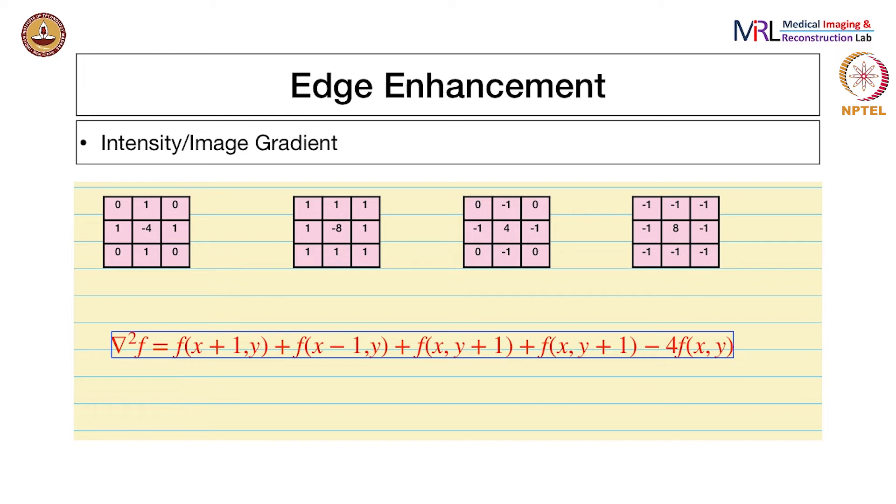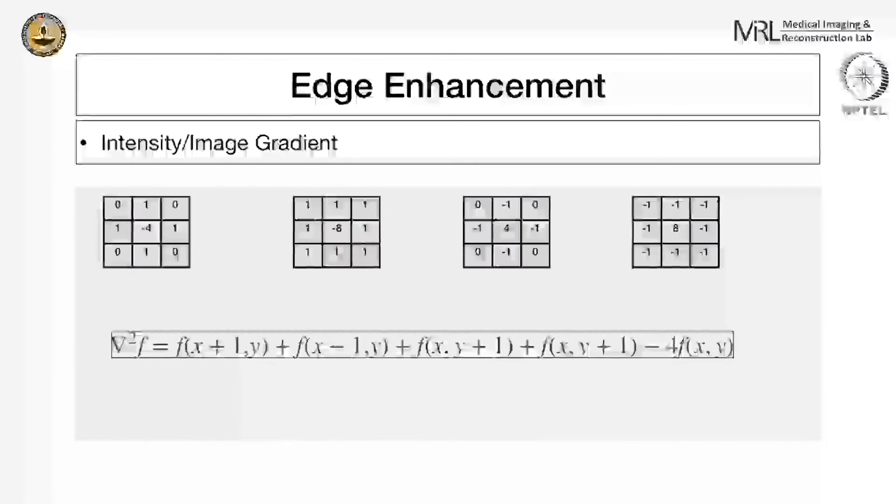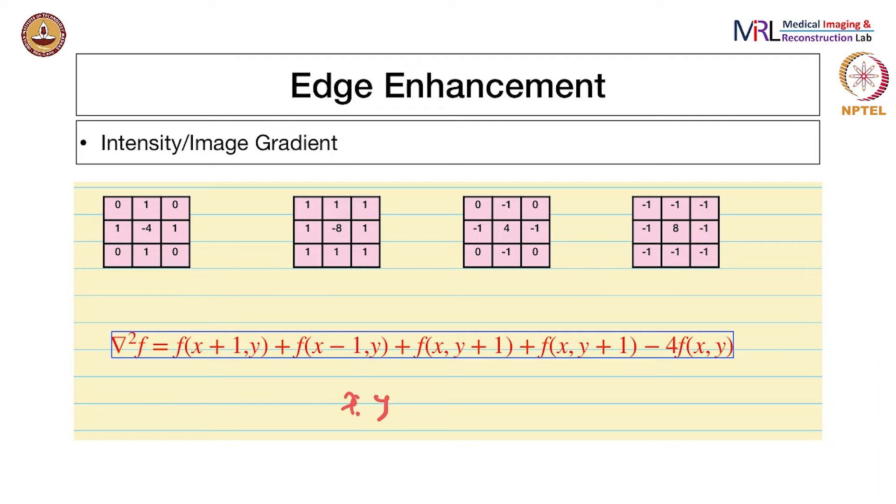The coefficient to the right is 1, to the left it's also 1. Similarly, top and bottom, with a minus 4 times x comma y which is here.